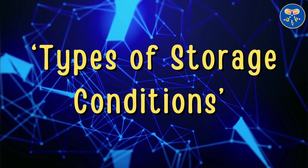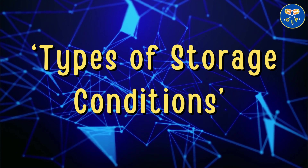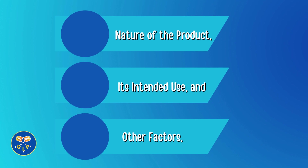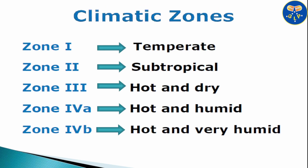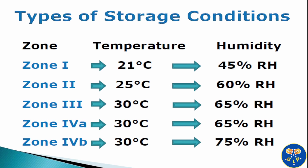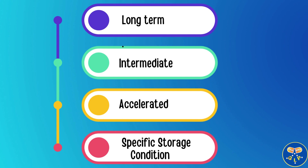Now let's explore types of storage conditions and how different storage conditions are chosen based on specific cases. Depending on the nature of the product, its intended use and other factors, different storage conditions are recommended. Different climatic zones or regions have varying climatic conditions which affect product stability. Storage conditions are adjusted to match these zones, ensuring the product remains effective regardless of where it is distributed. Some products are more sensitive to temperature or humidity variations. The storage conditions are selected to provide the most accurate representation of real world scenarios. The importance of selecting the right storage conditions in stability studies is crucial for maintaining product quality and safety. Different scenarios require different conditions, whether long term, intermediate, accelerated or specific storage conditions.